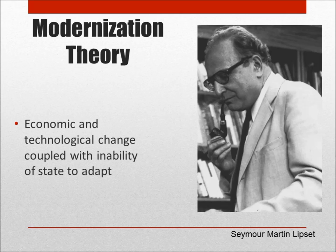Similar to Marxist theoreticians on one level, proponents of modernization theory associate revolution with economic and technological changes. However, unlike Marxist theory, modernization theory does not specify a particular arrangement of stages in which change occurs, nor do modernization theorists particularly identify with individual groups that will or should emerge victorious in a period of conflict. Instead, proponents of modernization theory, such as Seymour Martin Lipset, argued that technological and economic changes tend to mobilize groups that formerly were not politically active or participatory by raising their expectations. The failure of the state to meet these raised expectations, according to modernization theorists, is the catalyst to revolution.